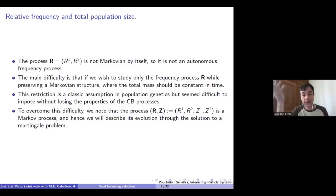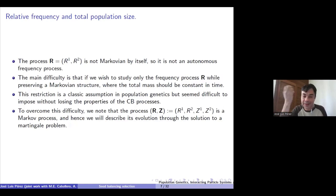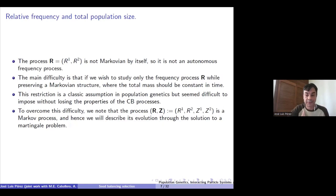What we do is take an idea sometimes used in population biology: construct the frequency process under the assumption that the total size of the population is constant in each of the islands. In the one-dimensional case there are many ways of doing this — for example, conditioning or time changes — but these techniques do not work in general. So we developed this new technique, which we call the cooling technique, in order to construct such a process. To implement this technique, we consider the whole process given by the frequency and the total size of the population, which is Markovian, and describe its dynamics by means of a solution to a martingale problem.